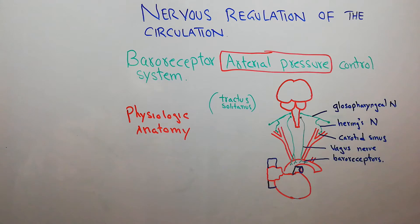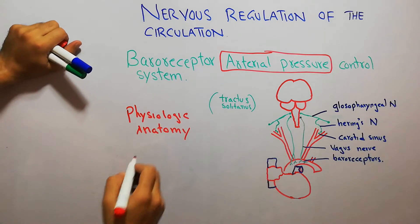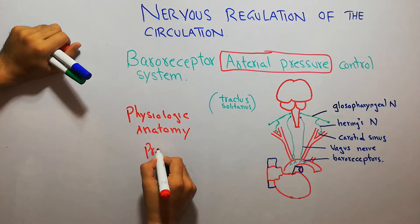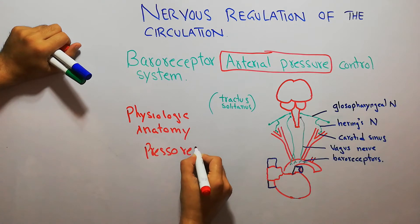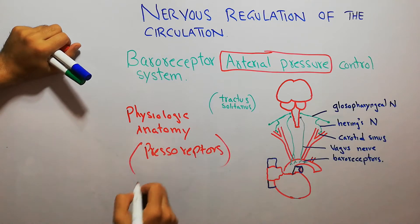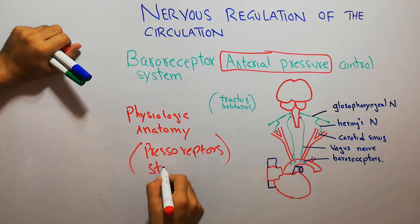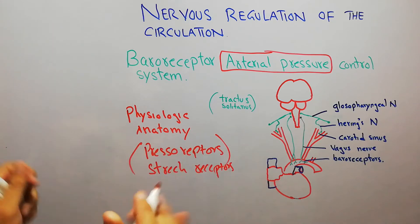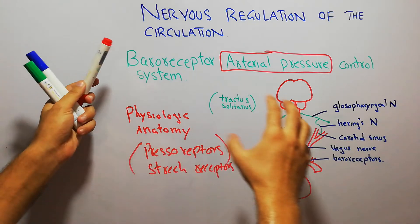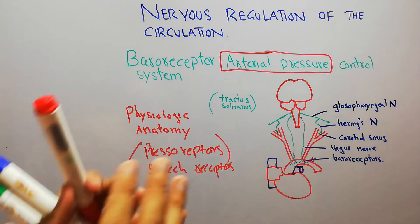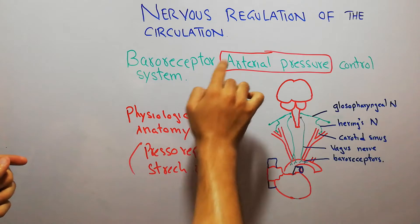What are baroreceptors? Baroreceptors are stretch receptors. These baroreceptors are stretch receptors that are present in different arteries — almost each and every artery in the thorax of the human body contains baroreceptors.